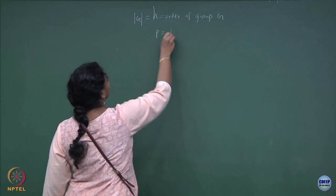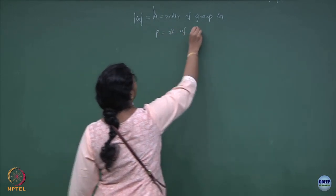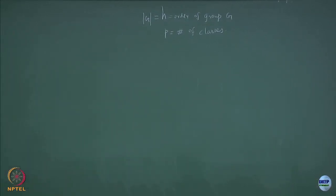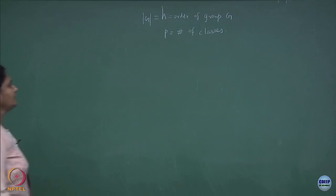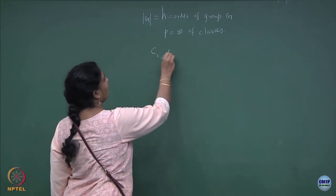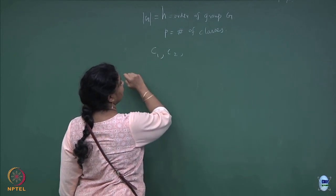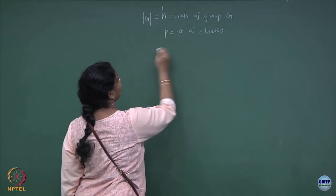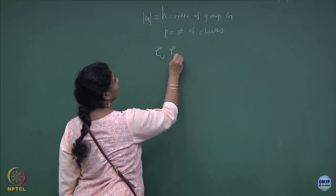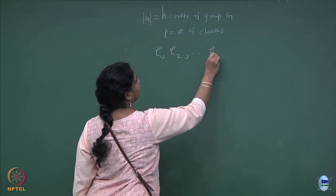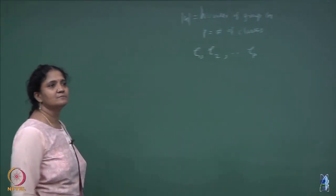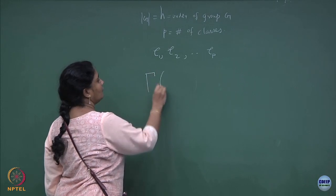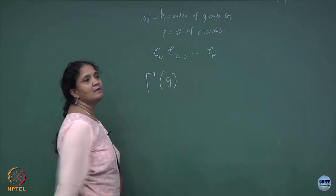P is the notation we are going to use for the number of classes, and classes will be denoted by C1, C2. Do not confuse this C with your group structure — you can use a curly C1 if you want. So C1 through CP, P classes are there. I also said that we will use gamma of G as a representation.